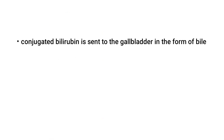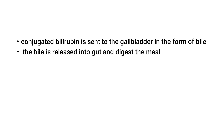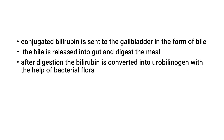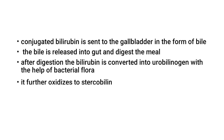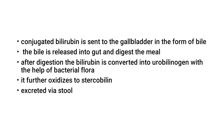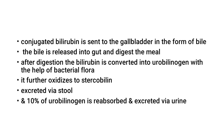This conjugated bilirubin is sent to the gallbladder in the form of bile. The bile is released into the gut — specifically the duodenum — whenever there is digestion of a meal. After digestion, the bilirubin is converted into urobilinogen with the help of bacterial flora in the gut. This urobilinogen is then oxidized to become stercobilin, the brown pigment excreted via stool. About 10% of urobilinogen is absorbed and excreted via urine.